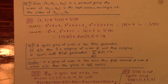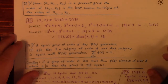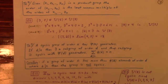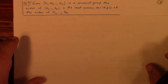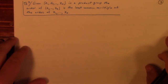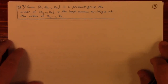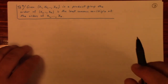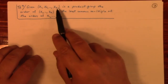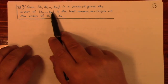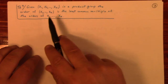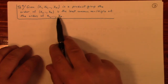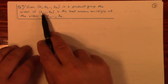I want to talk a bit more about product groups — what do we know about them, how can we understand and analyze them? Given an element of a product group, the order of that element is the least common multiple of the orders of its components.